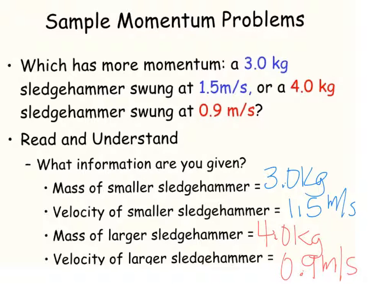To find each one's momentum, we need to multiply the mass times the velocity. In your binder, do the calculations and find the answer to this question.